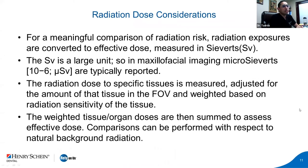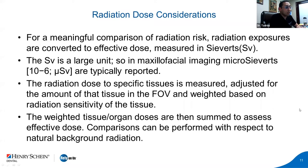Regarding radiation consideration, we measure our radiation exposure through a unit called Sieverts or SV. It's a large unit, so in maxillofacial imaging, micro-Sieverts — typically 10 to the power of 6 micro-Sieverts — is how we usually report in maxillofacial imaging. Radiation dose to specific tissue is measured and adjusted for the amount that tissue in the field of vision can handle and its sensitivity. Tissue sensitivity is something we use to assess the effective dose — what's needed versus too much — so we can have the safe amount of radiation when we expose our patients.